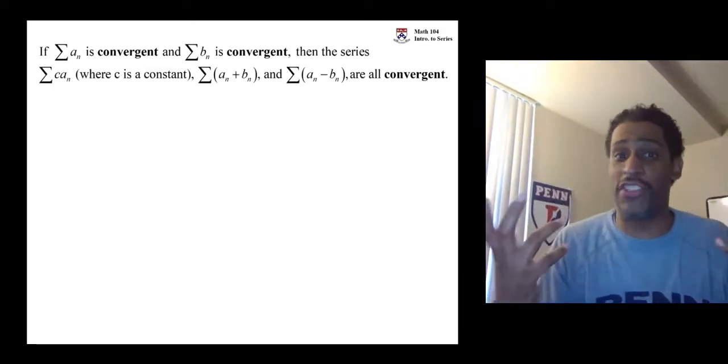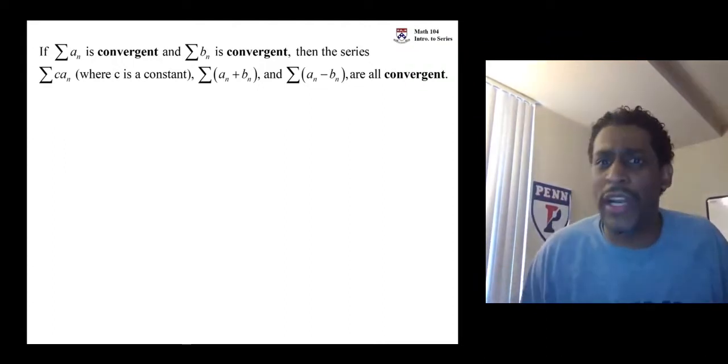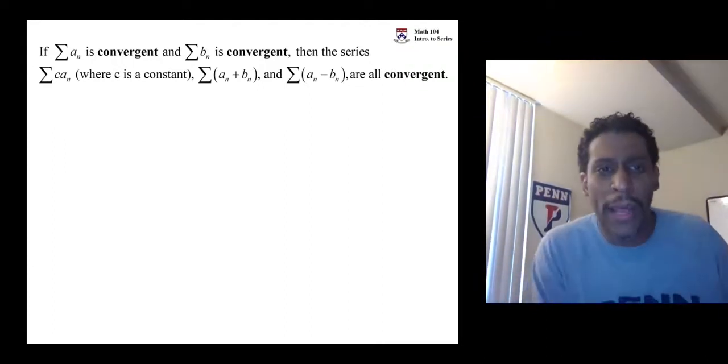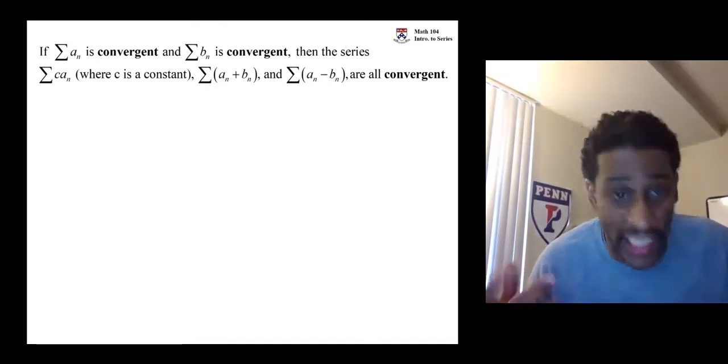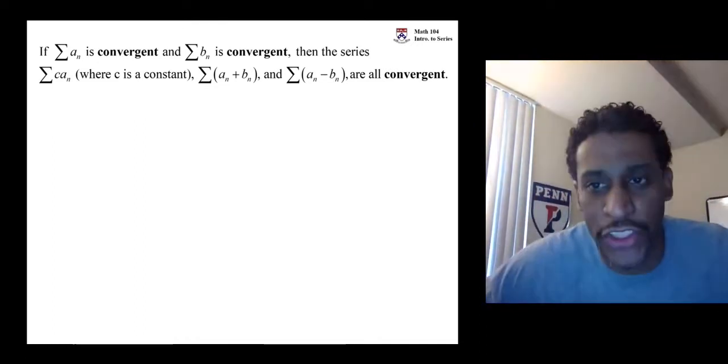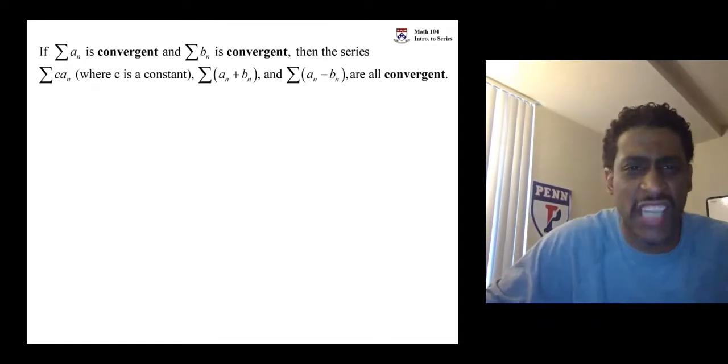Say you take a convergent series and another convergent series. What happens when you add them? What happens when you subtract them? What happens when you take one of them and times it by a constant? It's what you would think. It converges. It doesn't stop it from converging.